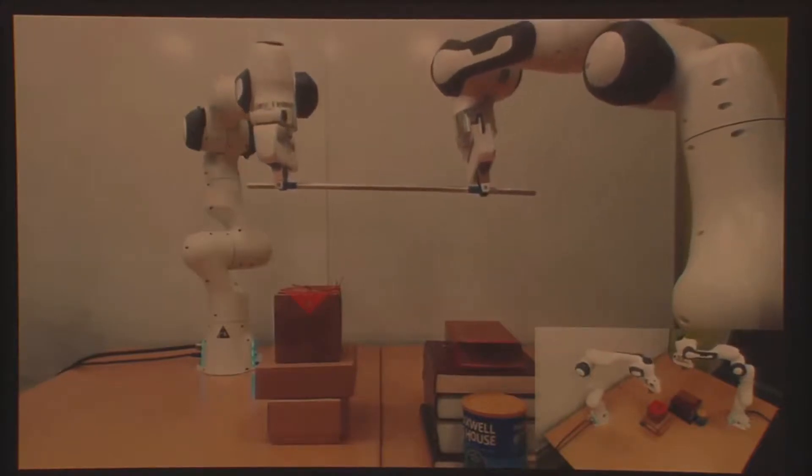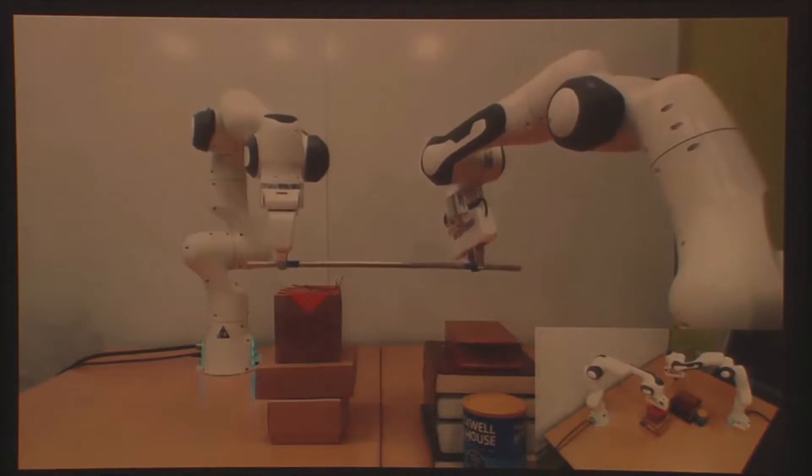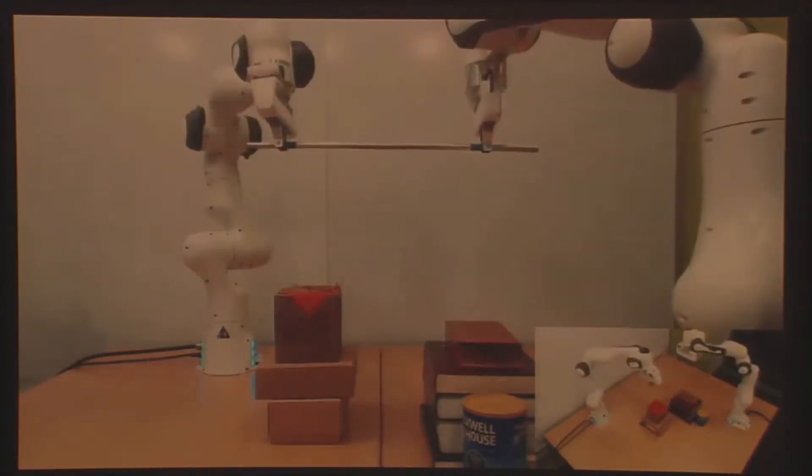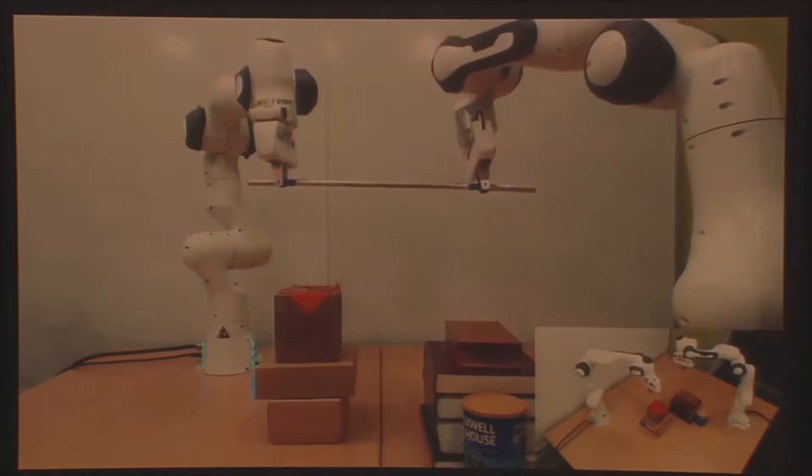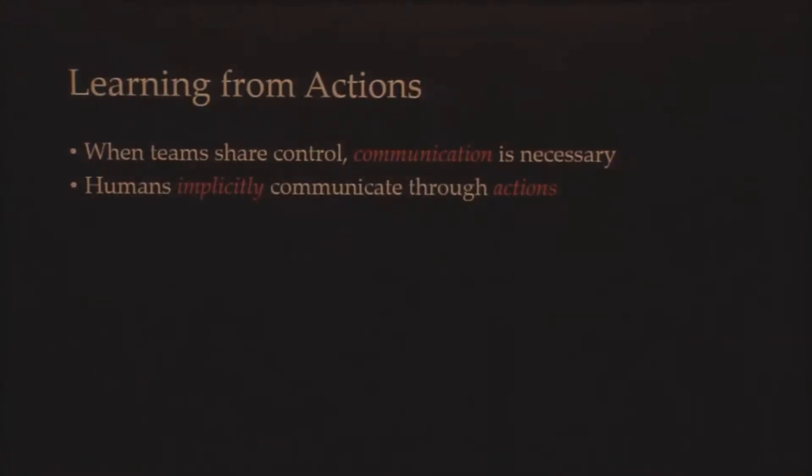Why did this fail? Why did the robots not successfully collaborate during this task? I would argue that the robots failed because they did not harness the implicit communication or information that was available within their partner's actions. We argue that when robots share control, communication is often necessary. And humans do this communication, not only via words and speech, but also implicitly through our actions. And I argue that robots should be able to do the same.